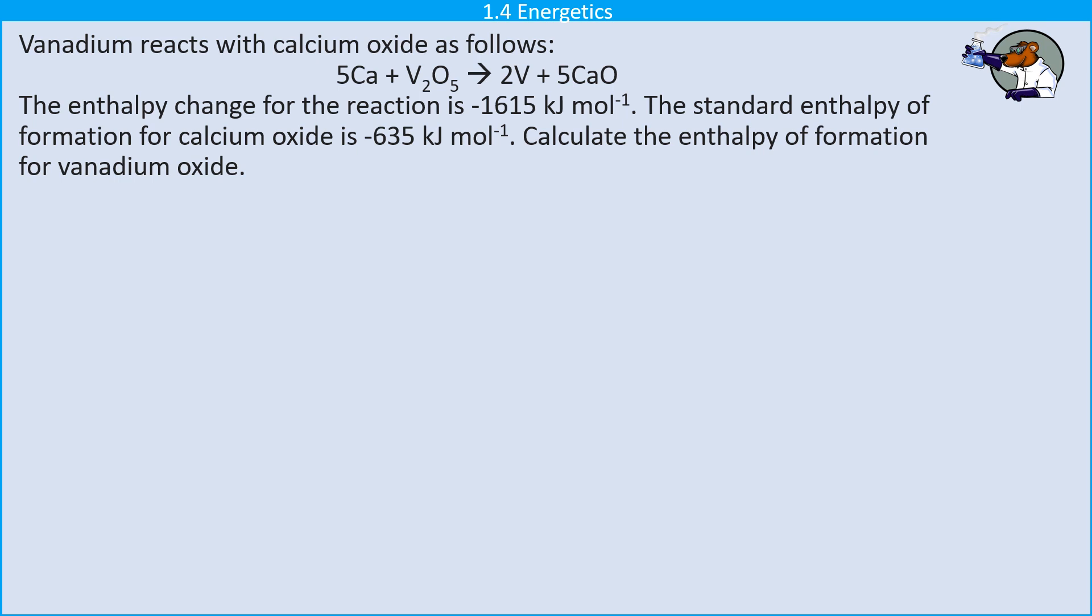Now, if you've drawn a correct cycle, but then followed it the wrong way around, you still get one working mark for doing that out of the three marks that are available. But if what you've done is to do it numerically backwards, then your working is incorrect as well. And so you don't get any working marks at all. And so that's why I would always draw the diagram.